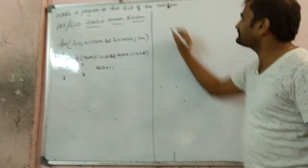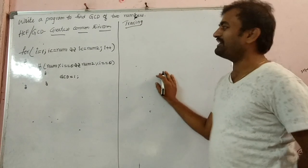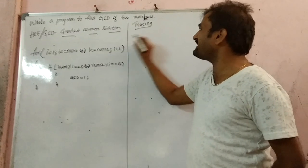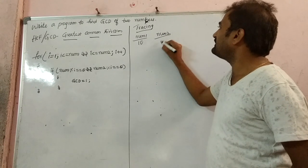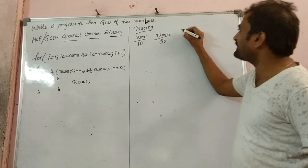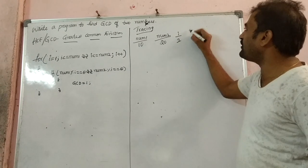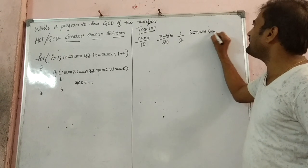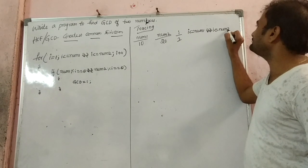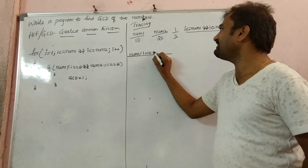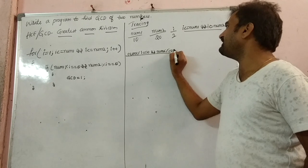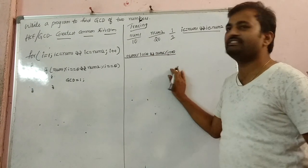Should I do tracing now? Tracing is better for you. So we'll do tracing now. So in tracing, for example, I'm taking num1 as 10 and num2 as 20. What are the conditions we have? i starts at 1. We have: i less than or equal to num1, AND i less than or equal to num2. These are the conditions. And next we have: num1 modulo i equals 0, AND num2 modulo i equals 0.